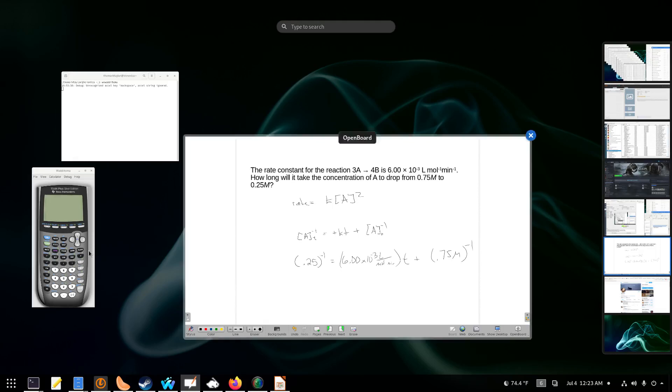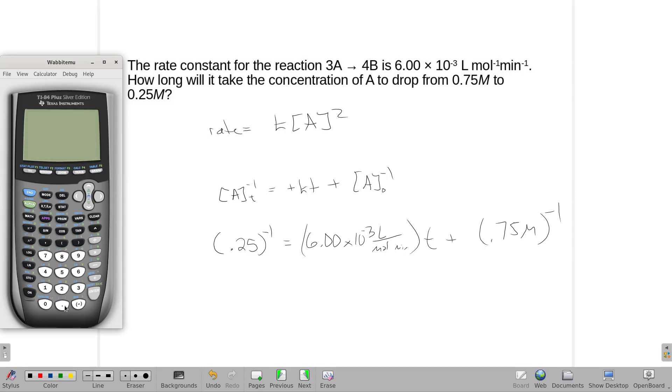Alright, so let's see what we get here. So I'm starting with everything on the left, so 0.25 inverted. And then I'm just going to subtract this minus 0.75 inverted. And then I'm going to divide by the 6 times 10 to the negative third.